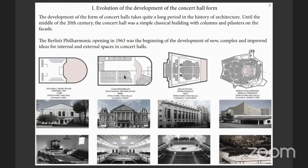First of all, it has to be mentioned a long period in the history of architecture. Until the middle of the 20th century, the concert hall was a simple classical building with columns and platters on the facade. The most common forms used in the past were rectangular, round, and various variations of these forms. Berlin's Philharmonic, opening in 1960, was the beginning of the development of internal and external spaces in concert halls.